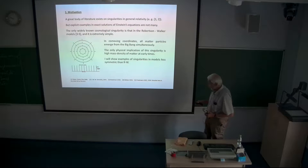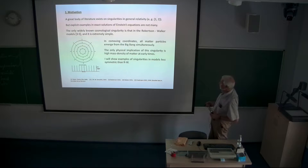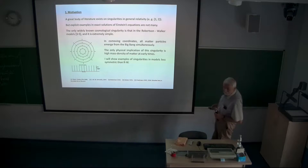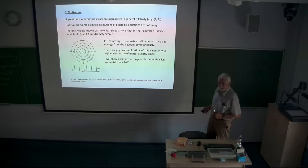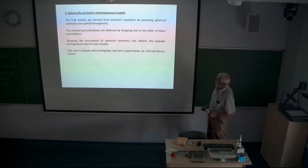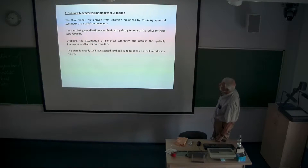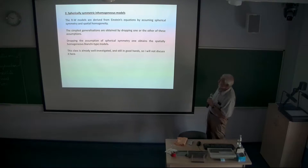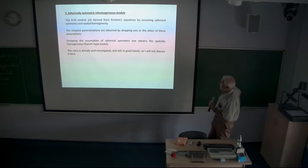The only directly observable implication of this singularity is that in the past, the mass density in the universe must have been very much higher than now. I will show examples of singularities in models less symmetric than Robertson-Walker — singularities that possibly have observable consequences. The Robertson-Walker models are derived from Einstein's equations by assuming spherical symmetry and spatial homogeneity, and the simplest generalizations are obtained by dropping one or the other of these assumptions.